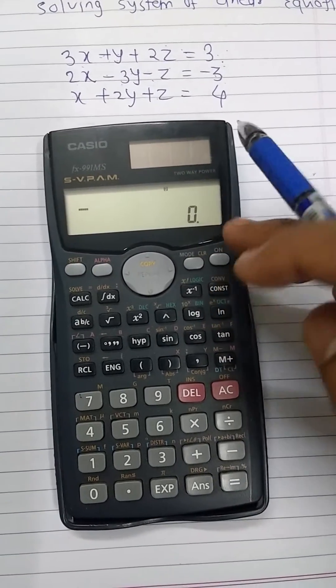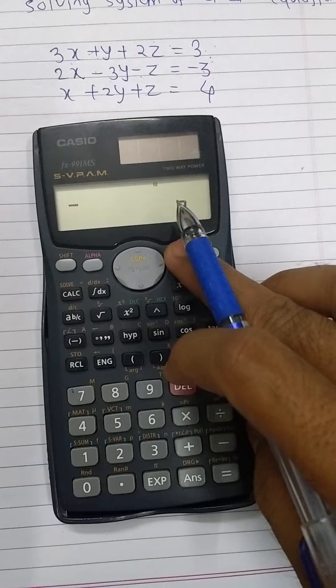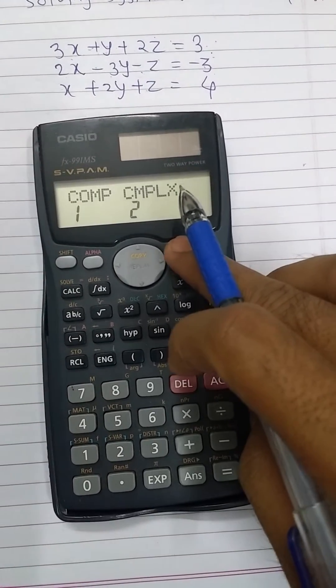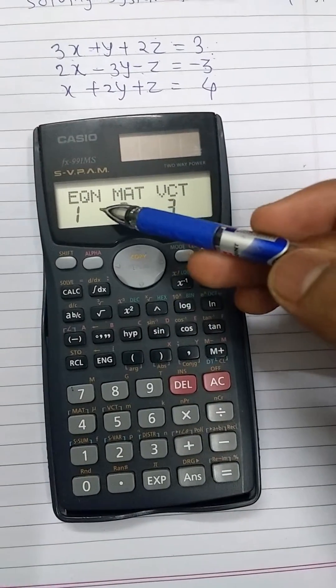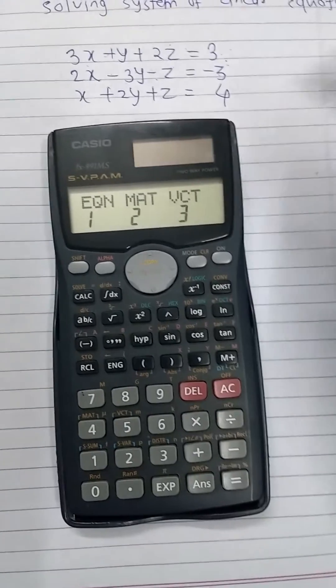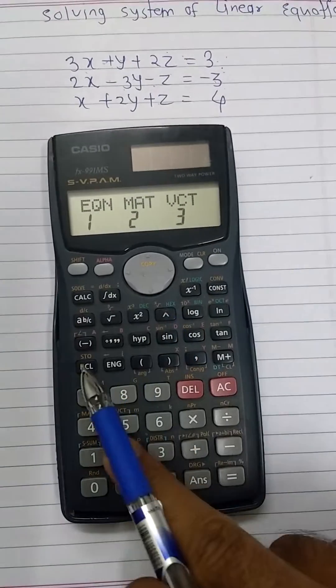Then our interest is in equation mode. For this purpose, press the MODE button 3 times. Then we will see 3 options: EQN, MAT, and VCT. For equation mode, press the 1 button.